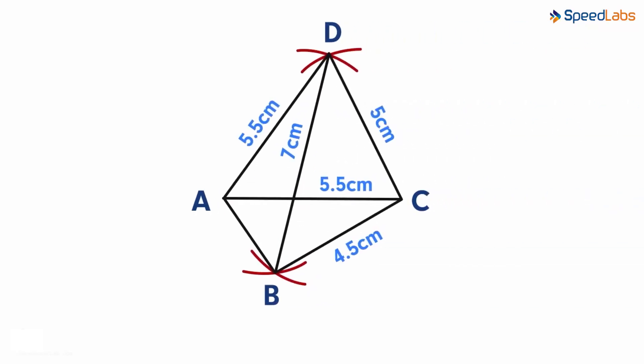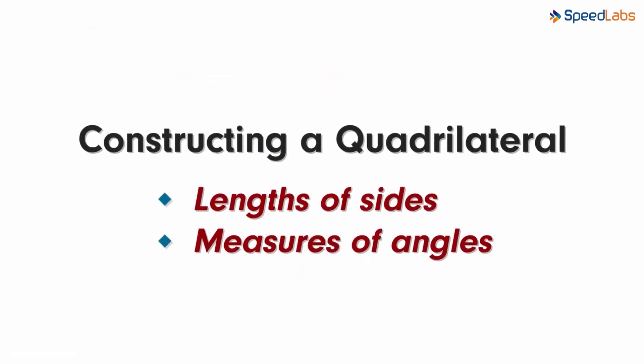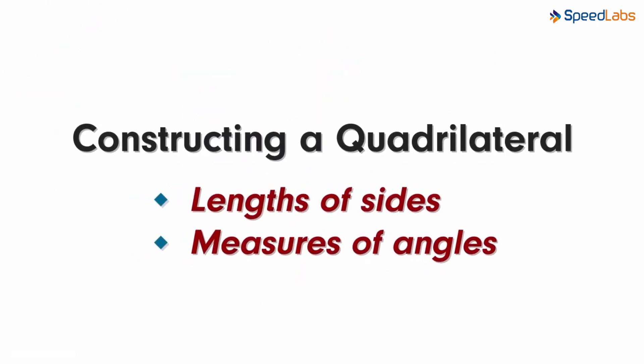We discussed constructing a quadrilateral if we are given lengths of both diagonals and lengths of three sides. Now what if we are given angles? Along with the lengths of a few sides, we are given angles too. Let's try that.